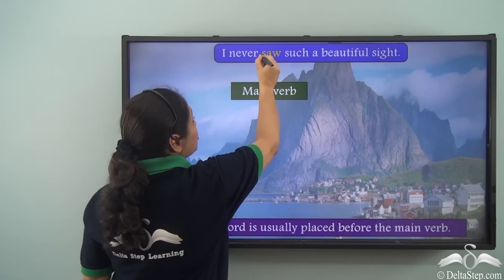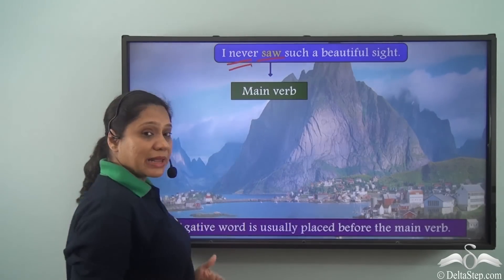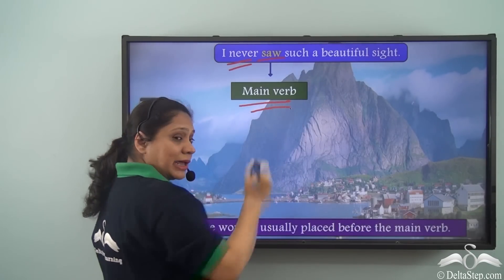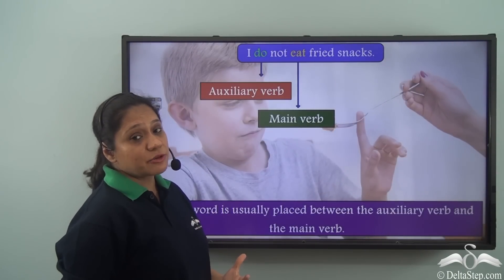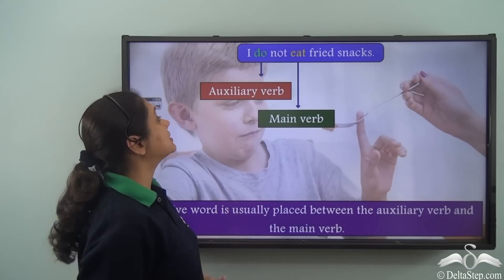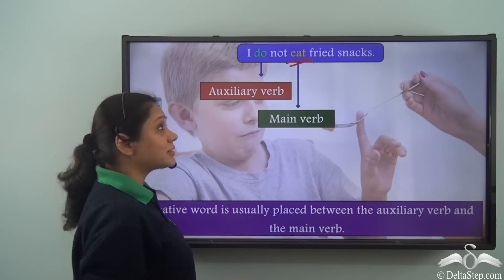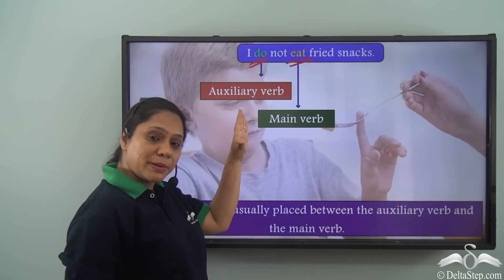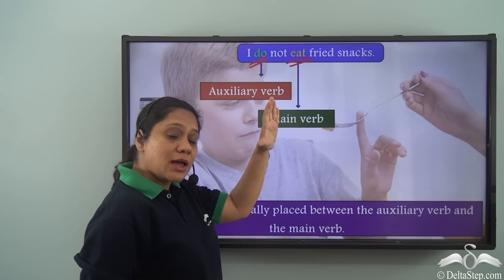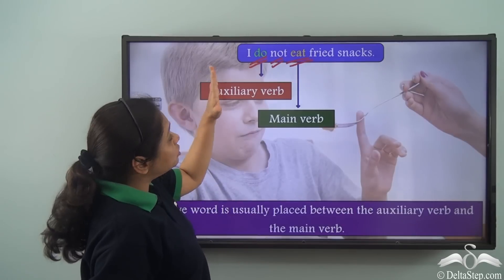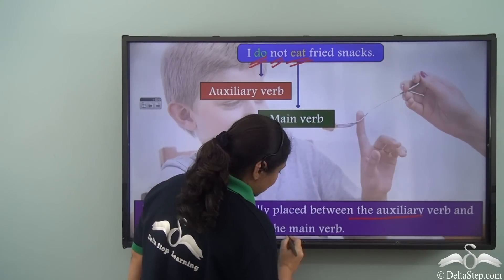In a negative sentence, the negative word is usually placed before the main verb. But in sentences which have both auxiliary verbs and main verbs, consider 'I do not eat fried snacks.' Here 'eat' is the main verb, and 'do' is the auxiliary verb helping us to form a negative sentence. The negative word 'not' is placed between the auxiliary verb and the main verb. So a negative word is usually placed between the auxiliary verb and the main verb.